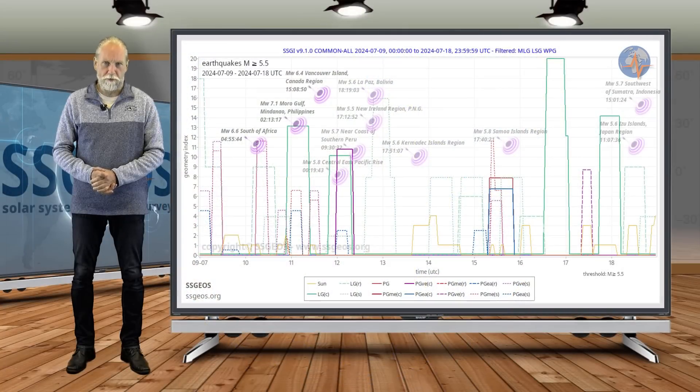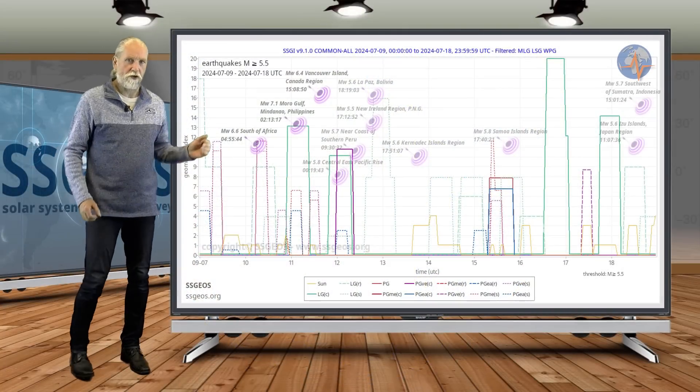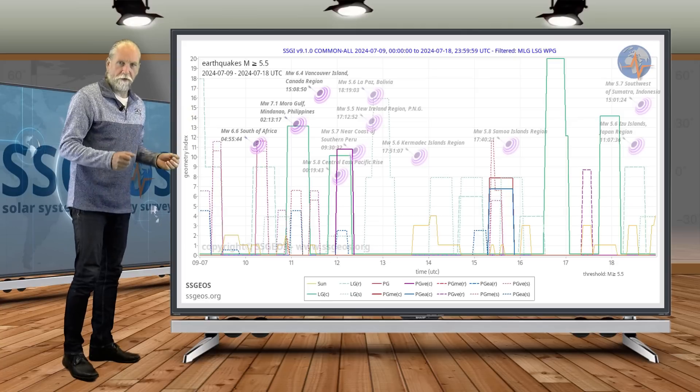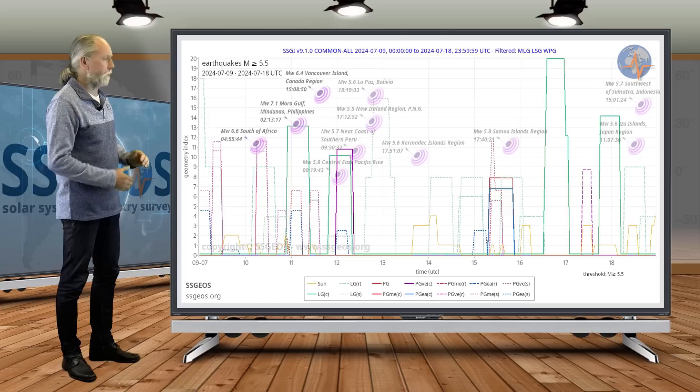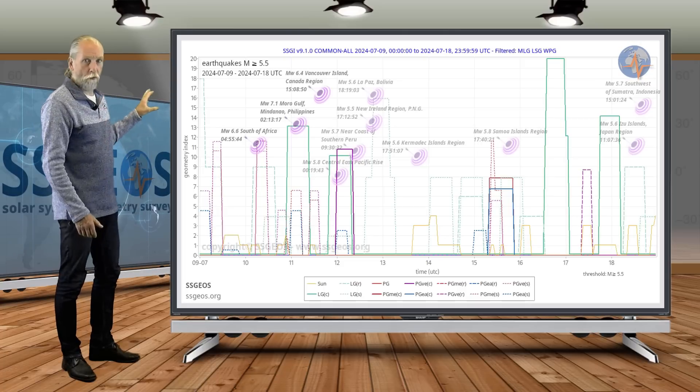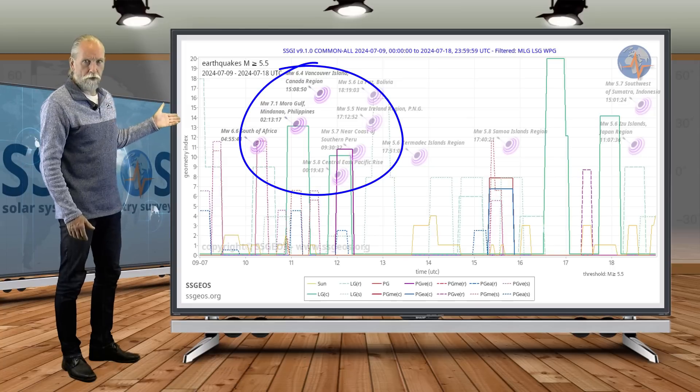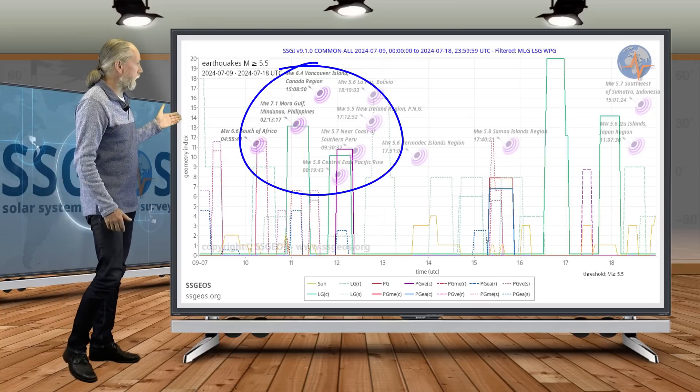Welcome to a new planetary and seismic update. You're looking at the SEGI graph with seismic activity in the previous time frame, magnitude 5.5 and larger, and we see an obvious clustering, a strong clustering of earthquakes, higher 5 magnitude and even 6 magnitude earthquakes.